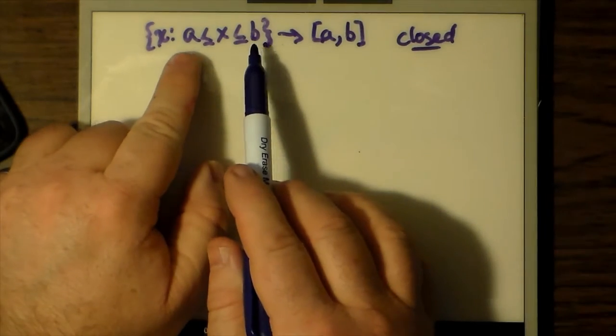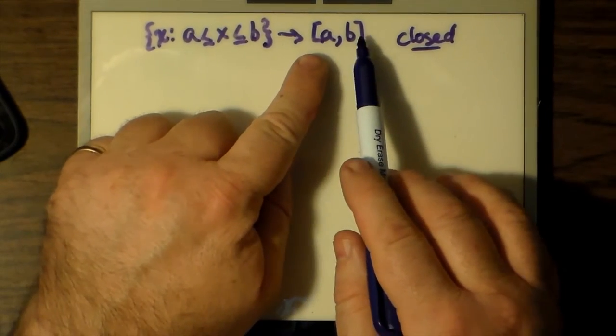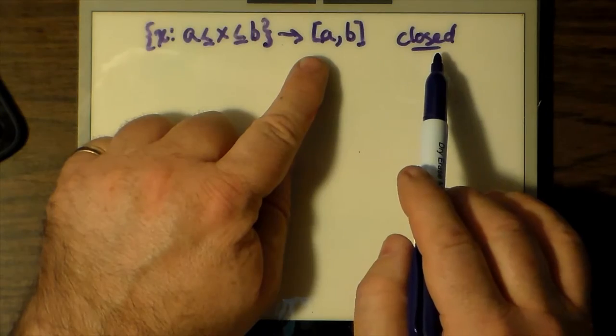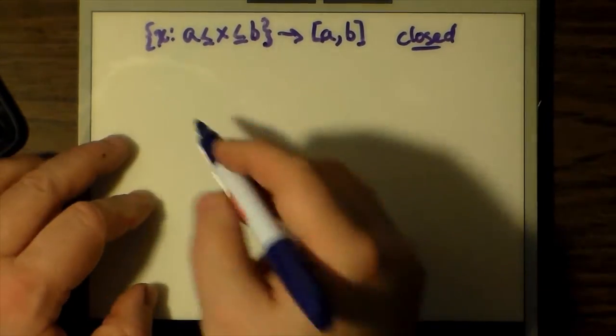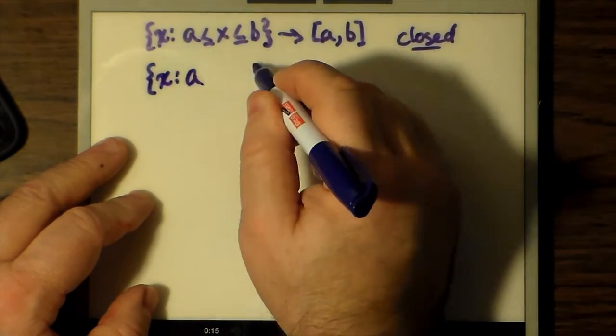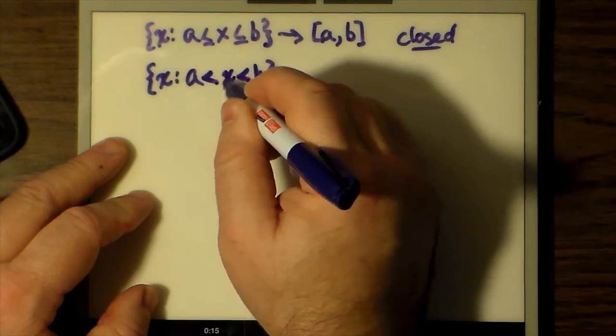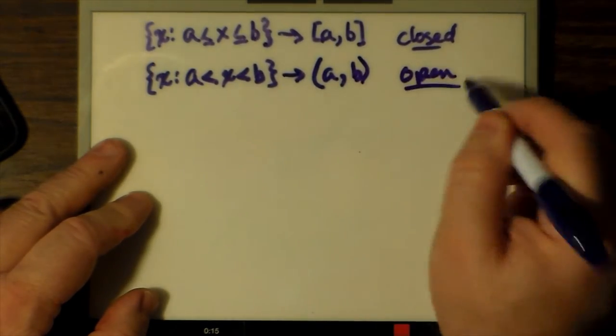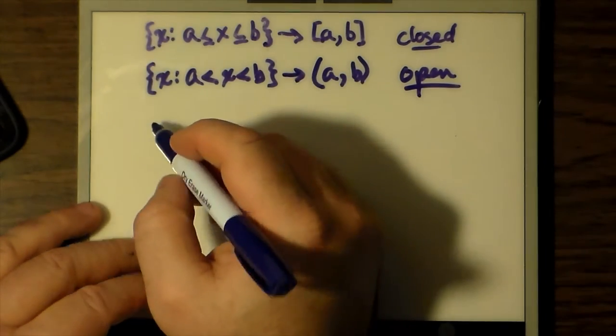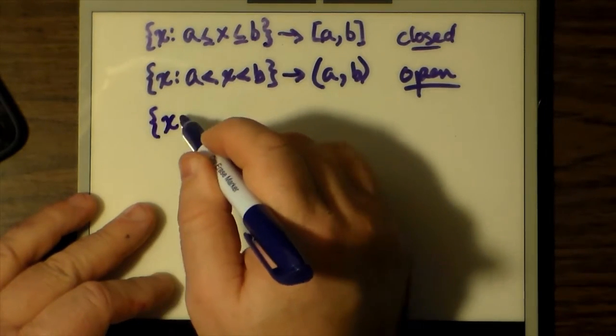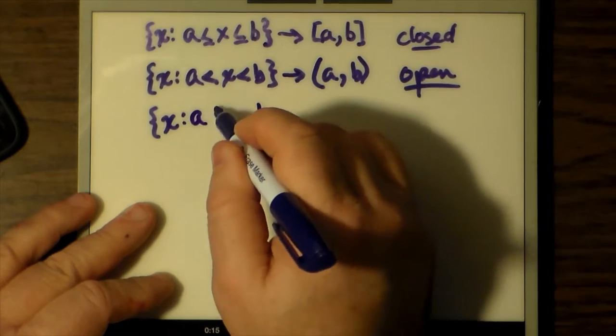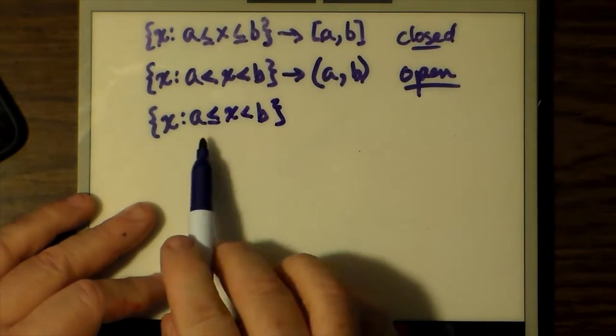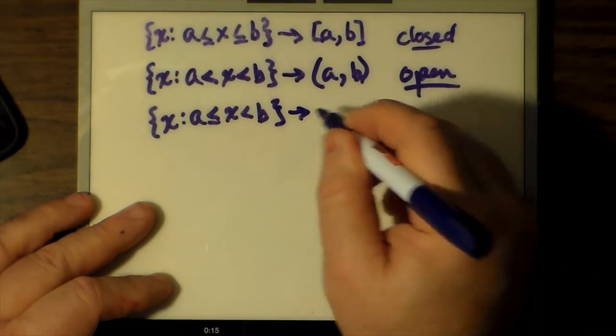We have an example here of a closed interval where x is a number between a and b, and we write [a, b] surrounded by square brackets. This tells us that the endpoints are included. If the endpoints are not included, then we write (a, b) in round brackets and call that an open interval. Sometimes we can go halfway and write x between a and b as closed on a but open on b, meaning that b is not strictly part of the interval.